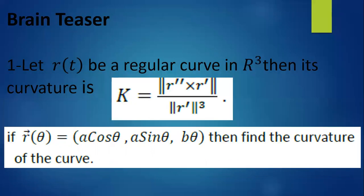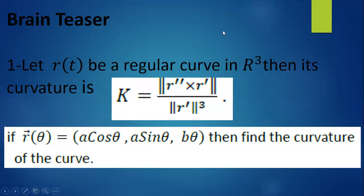Two brain teaser questions for you: First, let r(t) be a regular curve in R³; then its curvature is κ = |r'' × r'| / |r'|³. Second, given r(θ) as specified, find the curvature of the curve. This is the end of the lecture.